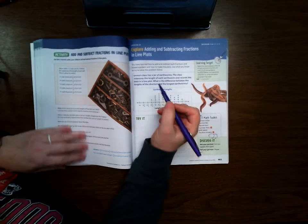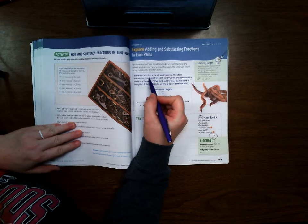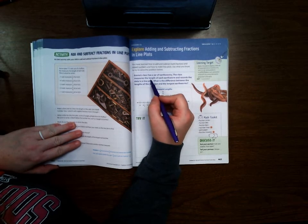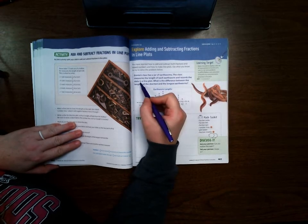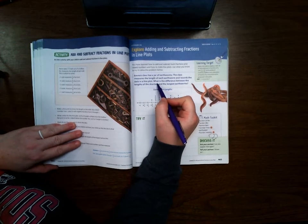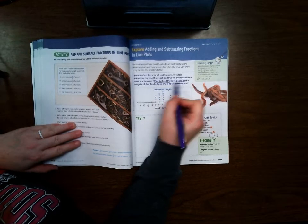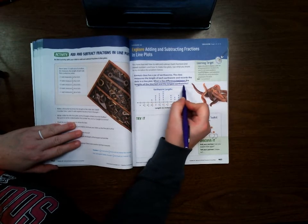Alright, so up here it says, Emma's class has a jar of earthworms. The class measures the length of each earthworm and records the data in a line plot.